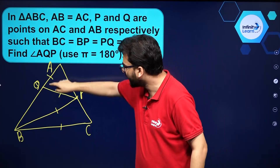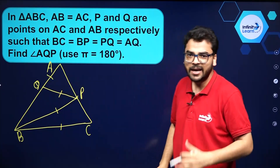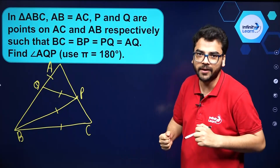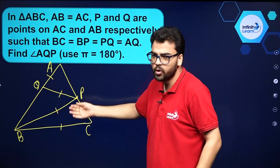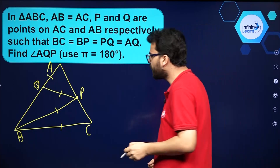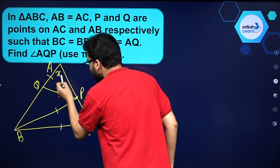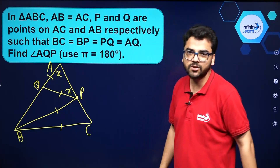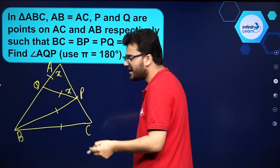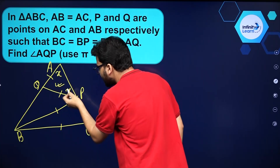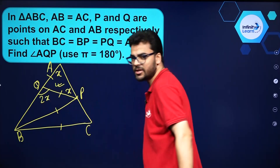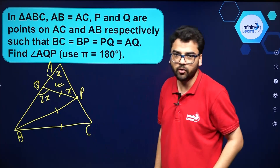We have to find angle AQP in terms of pi, where pi equals 180 degrees in radian. Since angles opposite to equal sides of a triangle are equal, if I assume the base angle is x, this will also be x. Using the exterior angle property in triangle AQP, this exterior angle will be equal to 2x.